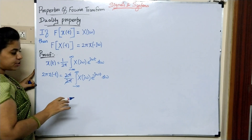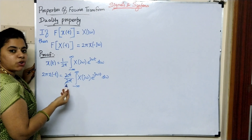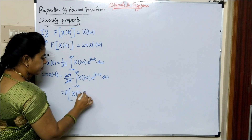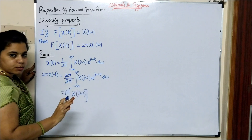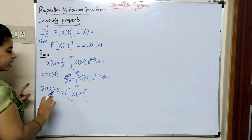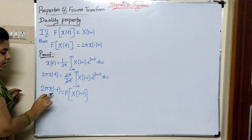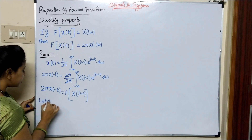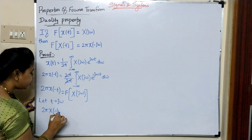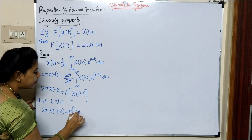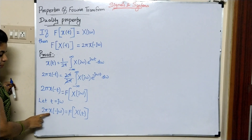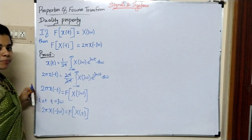2pi cancels, and comparing with the Fourier transform formula, we get 2pi x of minus t equal to Fourier transform of x of j omega. Substituting t equal to j omega, so 2pi x of minus j omega equals Fourier transform of capital X of t. Therefore Fourier transform of X of t equals 2pi x of minus j omega. Hence proved.